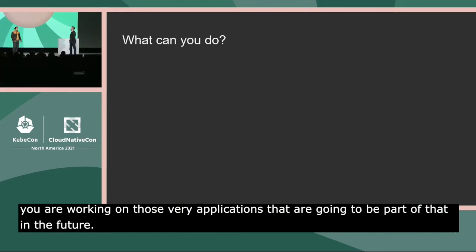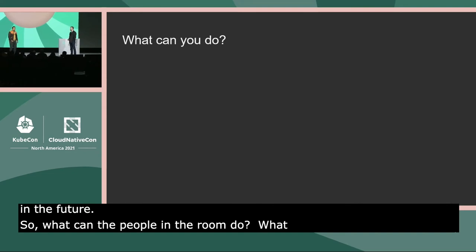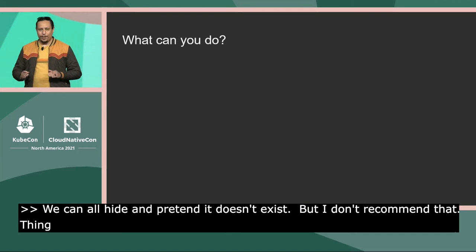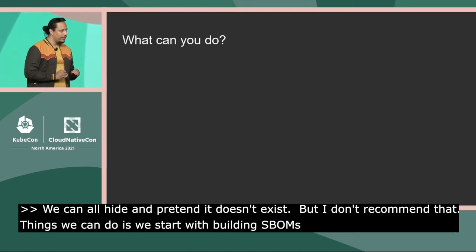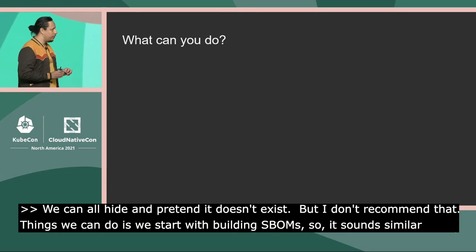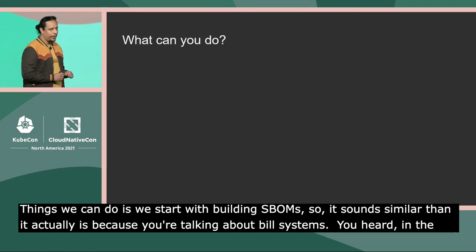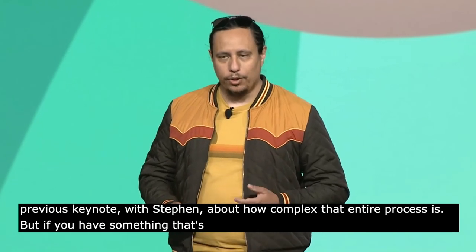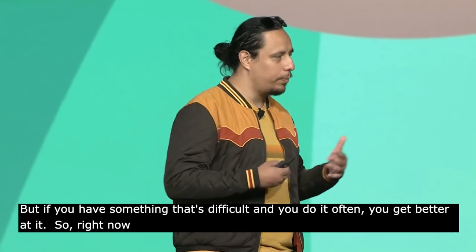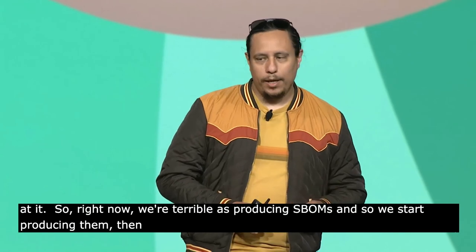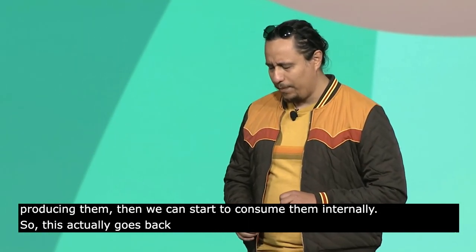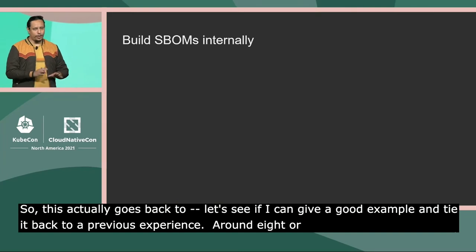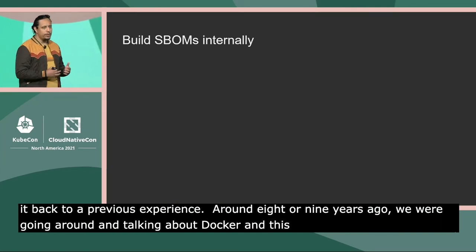So what can the people in the room do? We could all hide and pretend it doesn't exist, but I don't recommend that. We start with building SBOMs. It sounds simpler than it actually is — you're talking about build systems, and as you heard in the previous keynote, that entire process is complex. But if you do something difficult often enough, you get better at it. Right now we're terrible at producing SBOMs, so we start producing them.